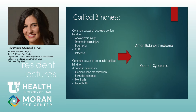Cortical blindness can be acquired or congenital. Acquired causes include anoxic brain injury (most common global cause), traumatic brain injury to the occipital lobe, eclampsia and rarely preeclampsia, CJD, infection, and certain anti-epileptic drugs — which can cause intermittent non-permanent cortical blindness that resolves with discontinuation. Congenital causes include birth trauma, occipital lobe malformations, perinatal ischemia, and meningitis or encephalitis in newborns, which can cause irreversible cortical blindness from birth.